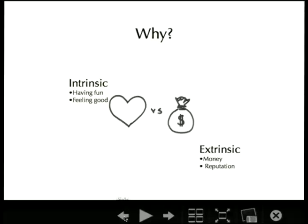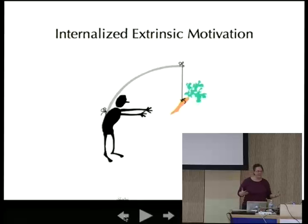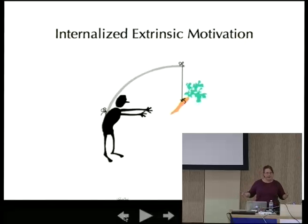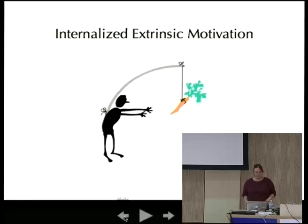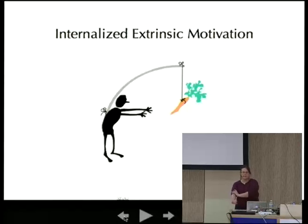Next to extrinsic motivation, which economists consider the core driver, apparently we also have a lot of intrinsic motivation — we just really like what we're doing. We feel good when we write source code and when we give it to other people. And on top of that, we've managed to internalize some extrinsic motivation, such as contributing back to a project because we use their code and feel we should.